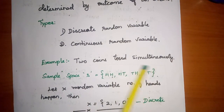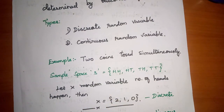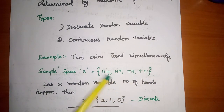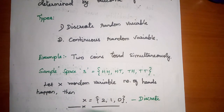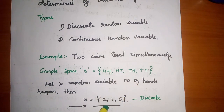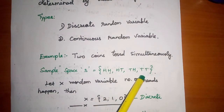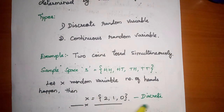The overall event gives the sample space. Let x be the random variable representing the number of heads. If the number of heads is 2, that is one event. If there is 1 head and 1 tail, that gives another value. If there are 2 tails, the number of heads is 0. So x can take values 2, 1, or 0. This is a particular set of values, so it is discrete.